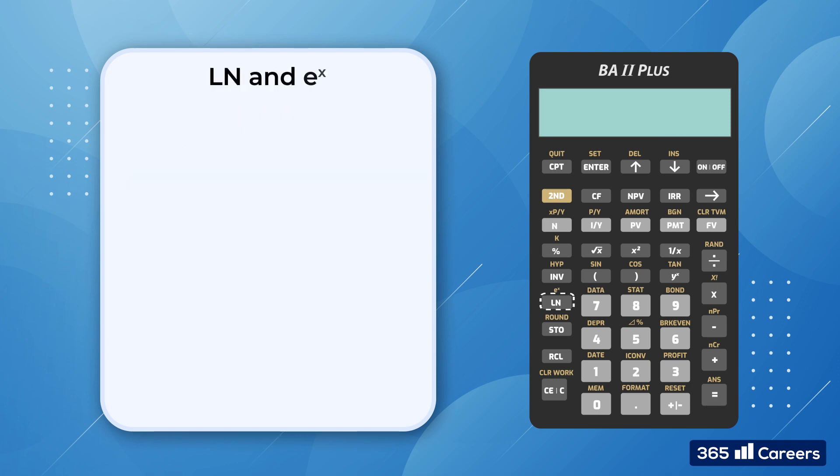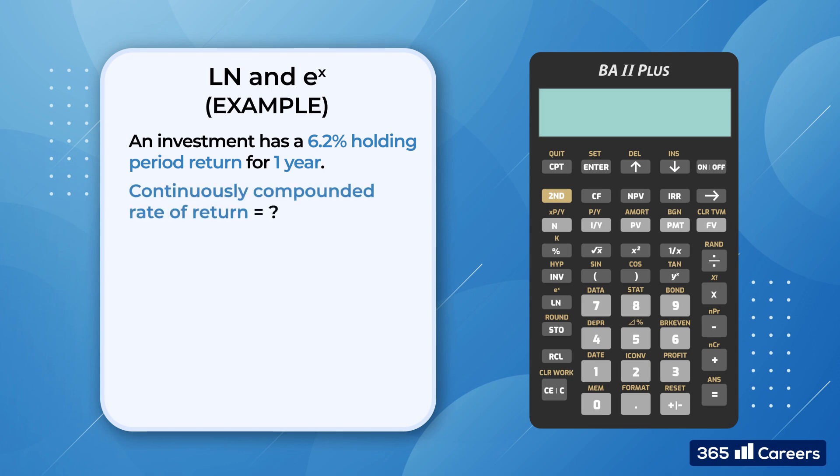Now let's examine the natural logarithm key. How do we use it in finance? Imagine that we have an investment, and its holding period return for one year is 6.2%. What is the equivalent continuously compounded rate of return? Right, so we put it at 1.062, and then hit that LN key to get 0.0602. So, a continuously compounded rate of return of 6.02% would increase the value of the investment by 6.2% over the course of one year.